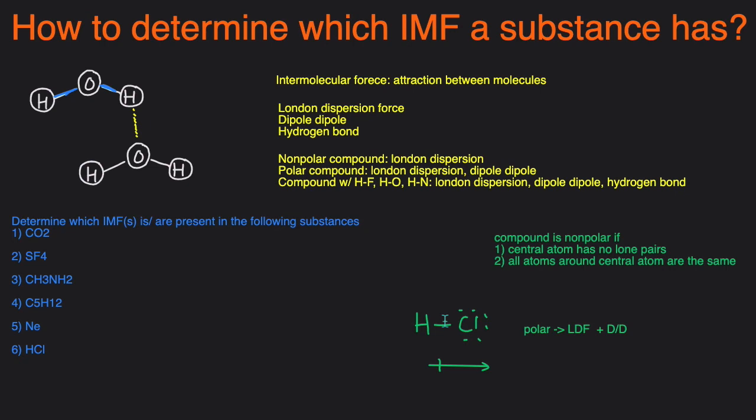And that's how you can determine what type of intermolecular force a substance has. The first step is just to draw the Lewis structure, then determine if it's polar or nonpolar. So once again, I went over that pretty quickly to save time. But I have videos that teach you how to draw Lewis structures and determine if it's polar or nonpolar in detail. And if a compound has HF, HO, or HN, then that means it has hydrogen bonding, dipole-dipole, and London dispersion force.